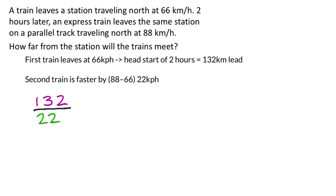Remember, division is finding out how many of something goes into another thing. And I want to know how many 22s there are in the 132. That means it's going to take six hours for the two trains to meet.